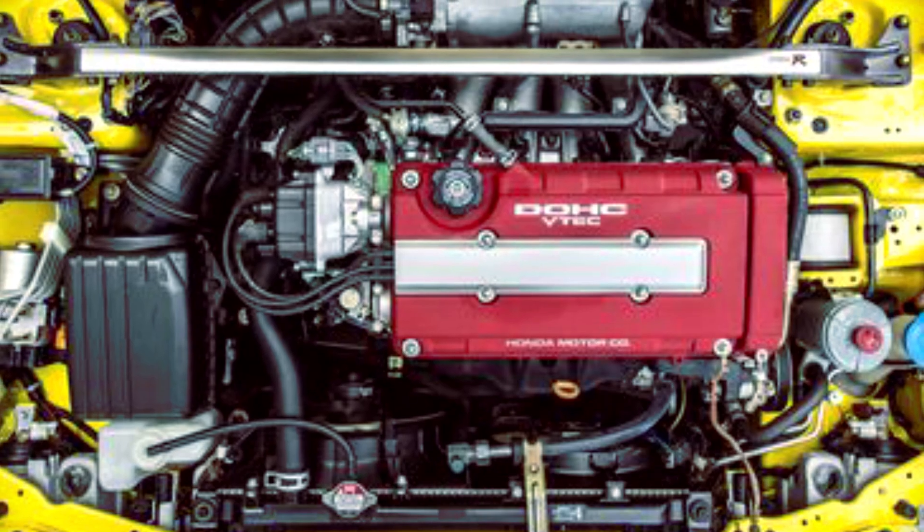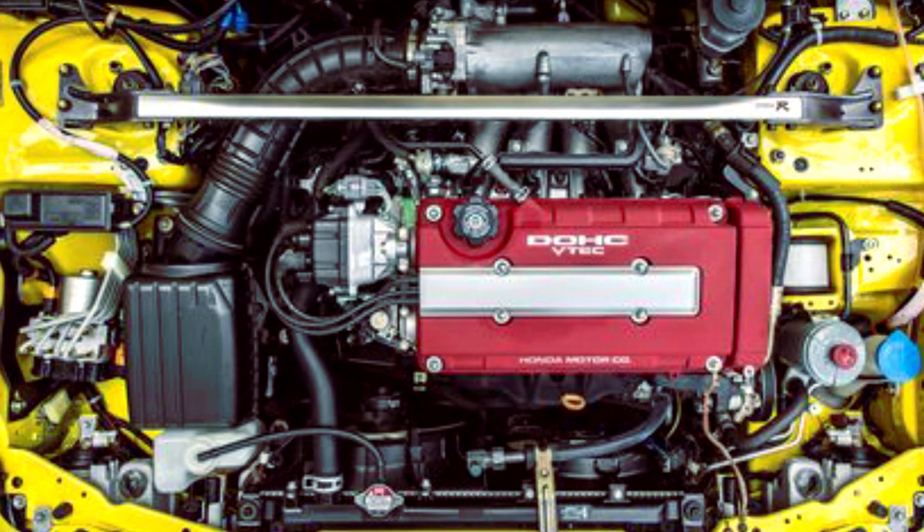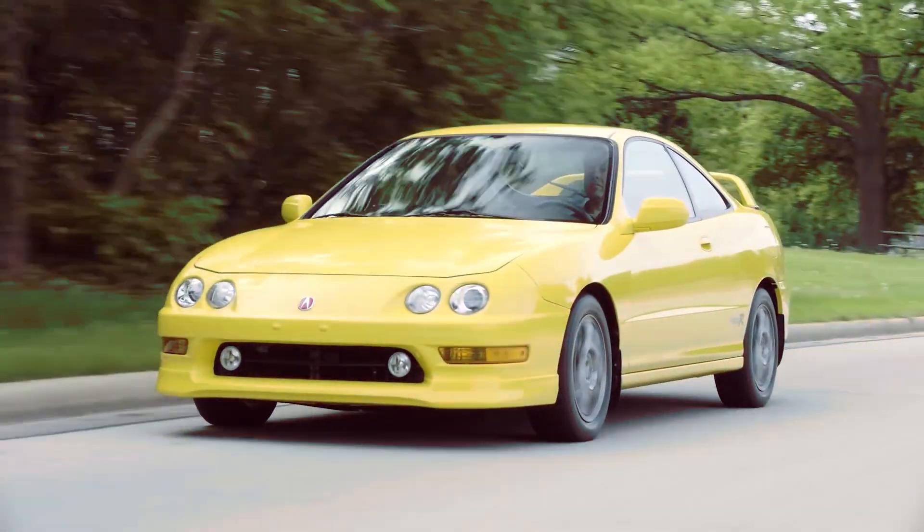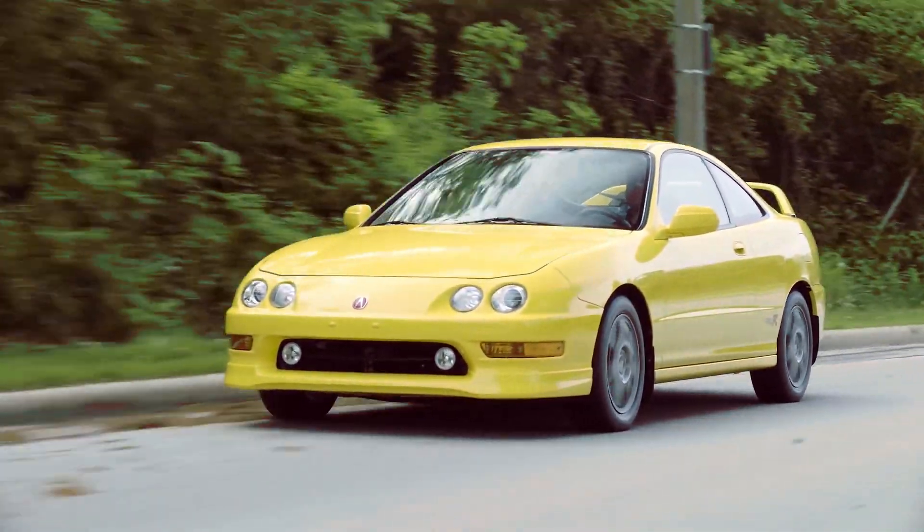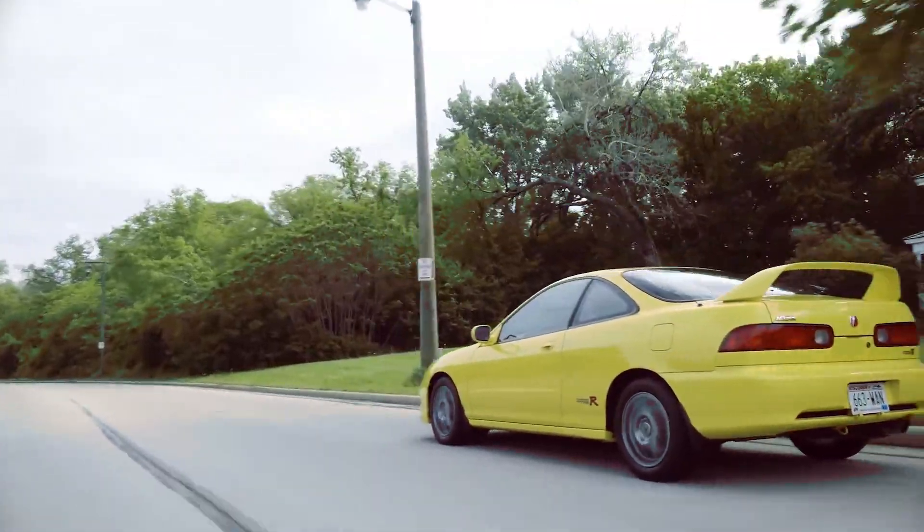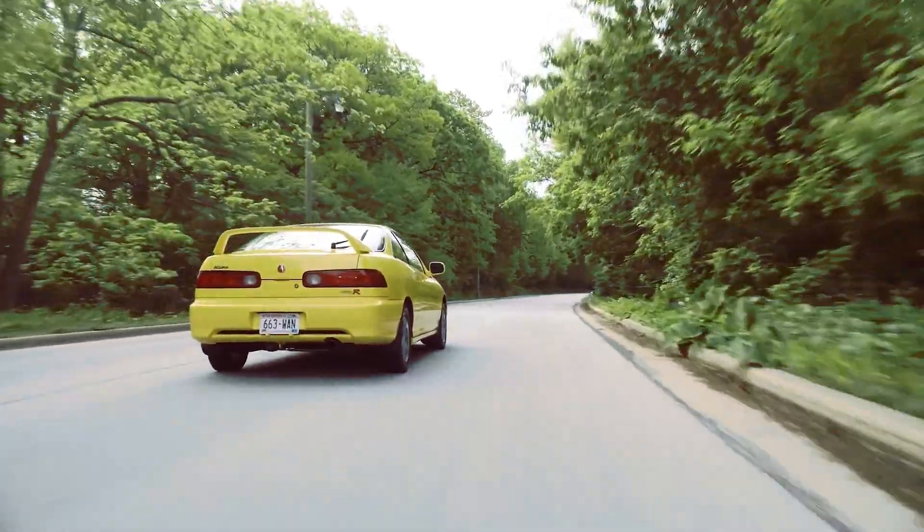At the time, the Integra Type R was producing more horsepower per liter than most supercars. Fun fact: the Integra Type R was introduced as a 1997 model to the U.S. market under the Acura brand, but with the only option being air conditioning.